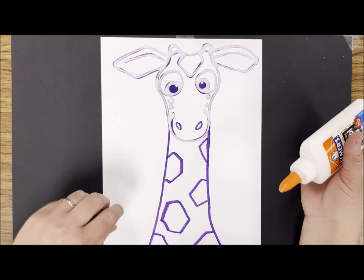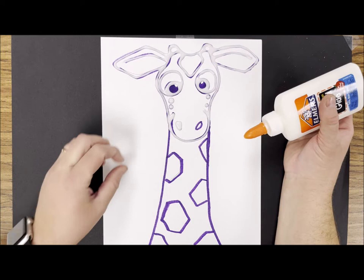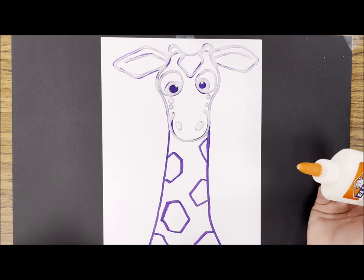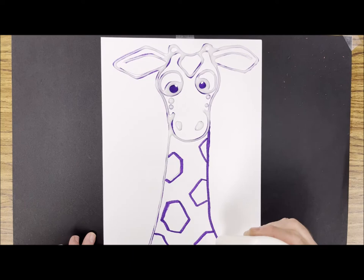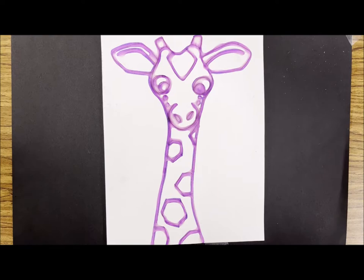Now I want to point out that small areas like these little dots or the nostril will get filled in with glue. It'll make a little puddle and fill them in. So if I don't want them to be colored with glue then I simply don't trace them with glue. Once I have all of my marker lines traced with glue, I have to let it sit and dry overnight.